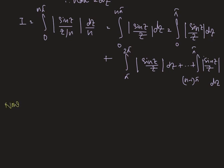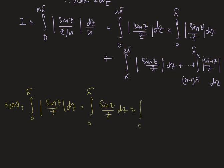Now, the integral from 0 to π of |sin(z)/z| dz equals the integral from 0 to π of sin(z)/z dz, which is greater than or equal to the integral from 0 to π of sin(z)/π dz, which equals (1/π) · integral from 0 to π of sin(z) dz, giving us 2/π.